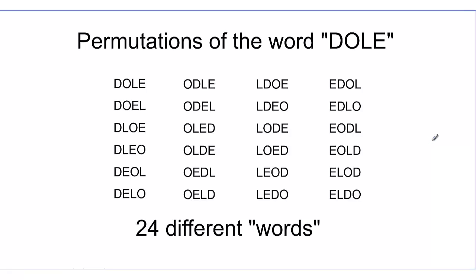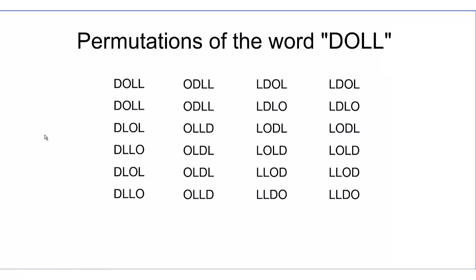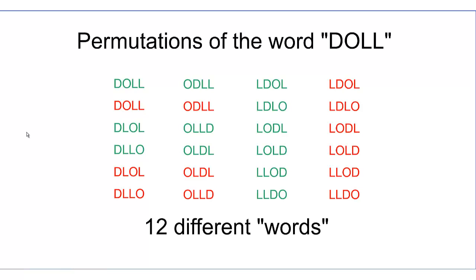Part 2 asks what happens if we find permutations of DOLL, D-O-L-L — essentially changing the E to an L. One way is to take the 24 current permutations and change all the E's to L's. We still have 24 words written down, however some are now the same as others. Highlighting unique words in green and repeats in red, it turns out we only have 12 different permutations of the word DOLL.